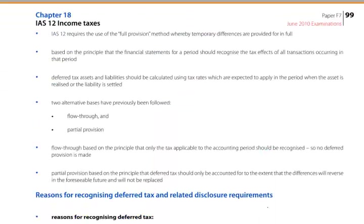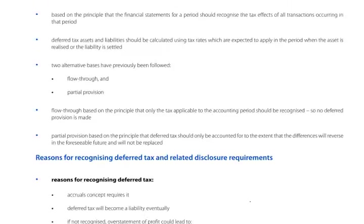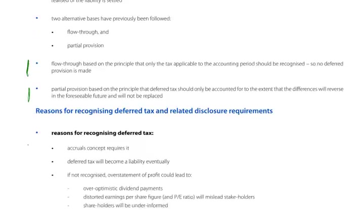IAS 12 requires the use of the full provision method, where temporary differences are provided for in full, based on the principle that financial statements for a period should recognize the tax effects of all transactions occurring in that period. Two alternative bases have previously been followed — the flow-through method and the partial provision — but it's unlikely Steve Scott will ask about those. The partial provision method was based on the principle that deferred tax should only be accounted for to the extent that differences will reverse in the foreseeable future and will not be replaced.